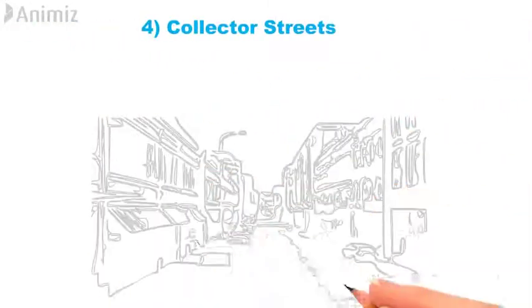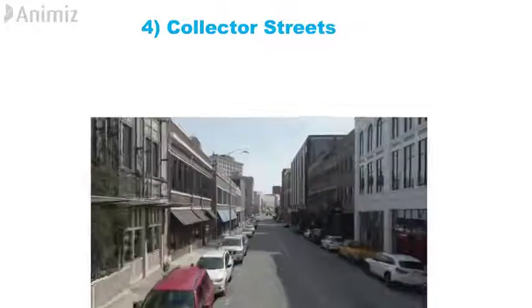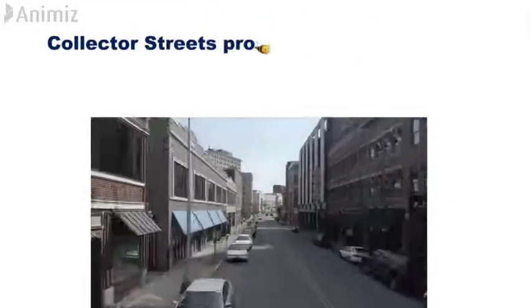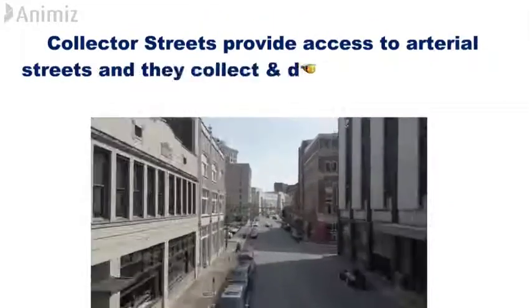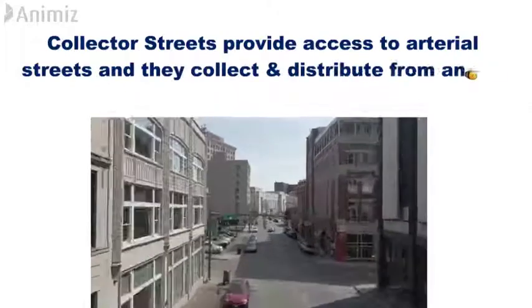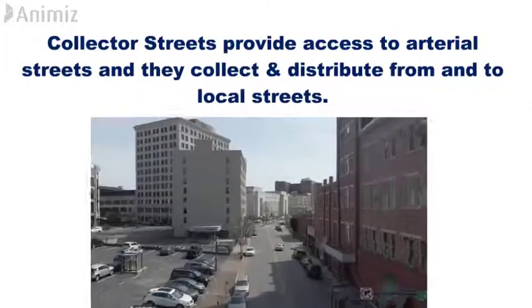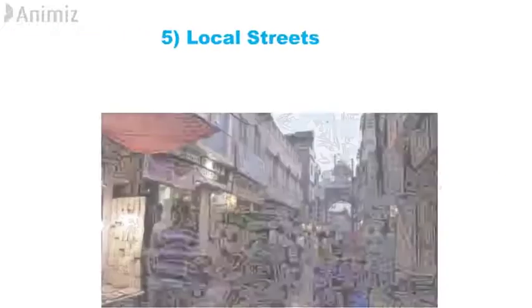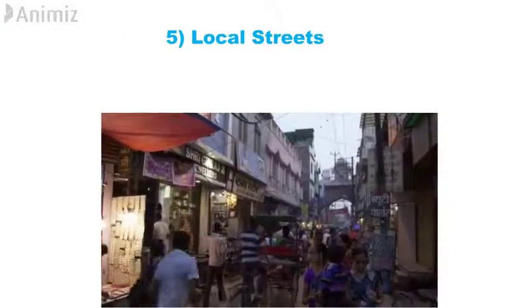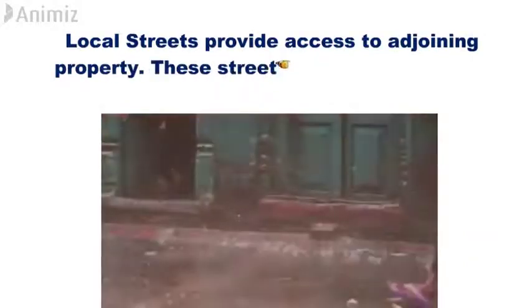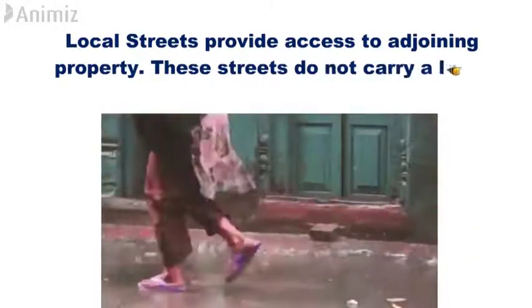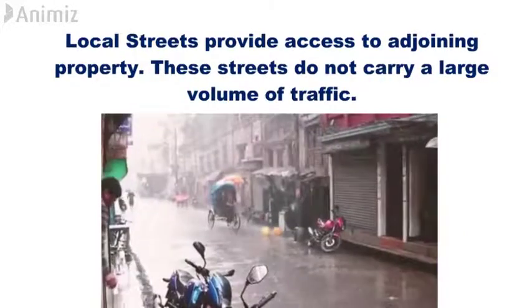4. Collector Streets. Collector streets provide access to arterial streets and they collect and distribute traffic from and to local streets. 5. Local Streets. Local streets provide access to adjoining property. These streets do not carry a large volume of traffic.